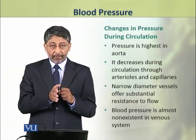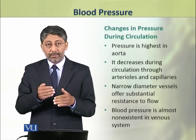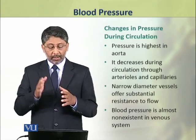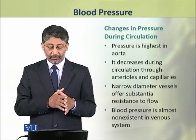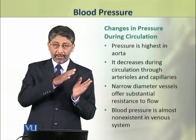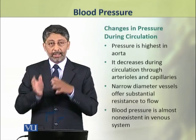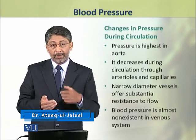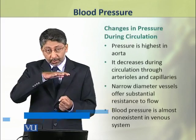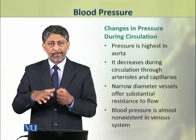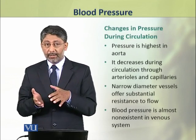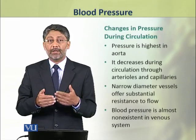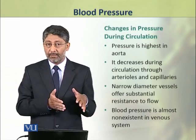The blood pressure generated from the ventricles changes during circulation through different regions of the body. Pressure is highest in the aorta. It decreases during circulation through arterioles and capillaries, as the narrow diameter vessels offer substantial resistance to flow. When blood from the capillaries enters the veins, the pressure is lower, so the venous system has very little pressure.